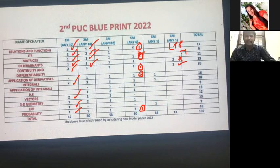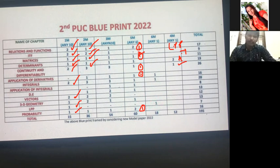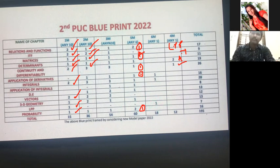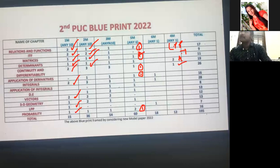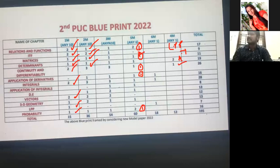For Continuity and Differentiability two-mark questions, they give three different questions. One is a continuity question — if they give a continuity problem, leave it; they are completely pathetic questions. Choose only differentiation questions, such as 2x + 3y² = cos(y/5), find dy/dx, or inverse trigonometry differentiation. The second question may be a UV formula question: x log x, sin x · log x, or just log x. That covers differentiation two-mark questions.